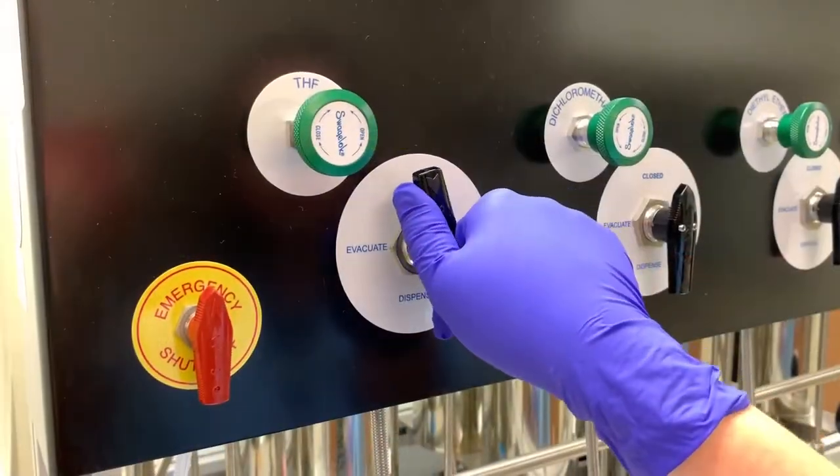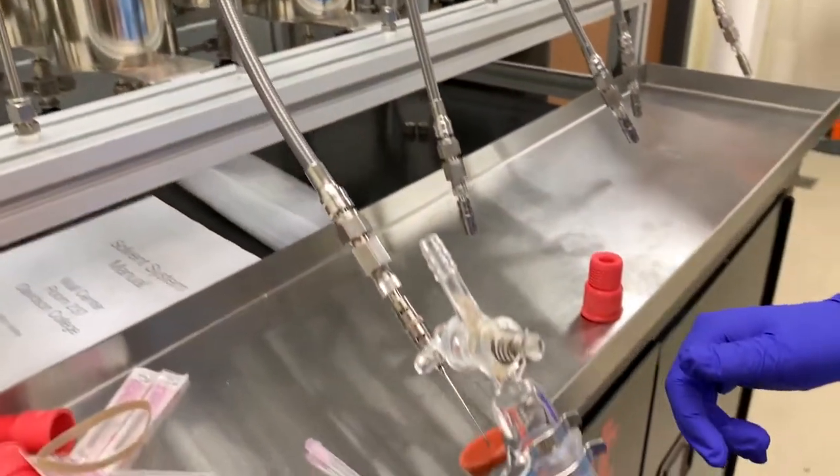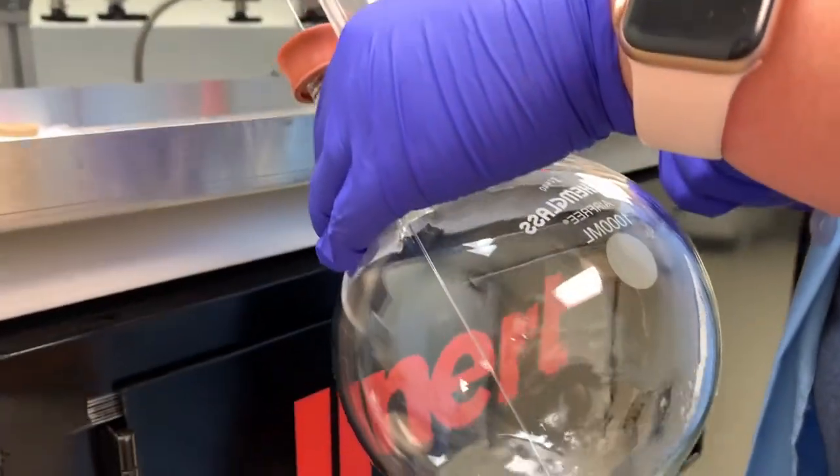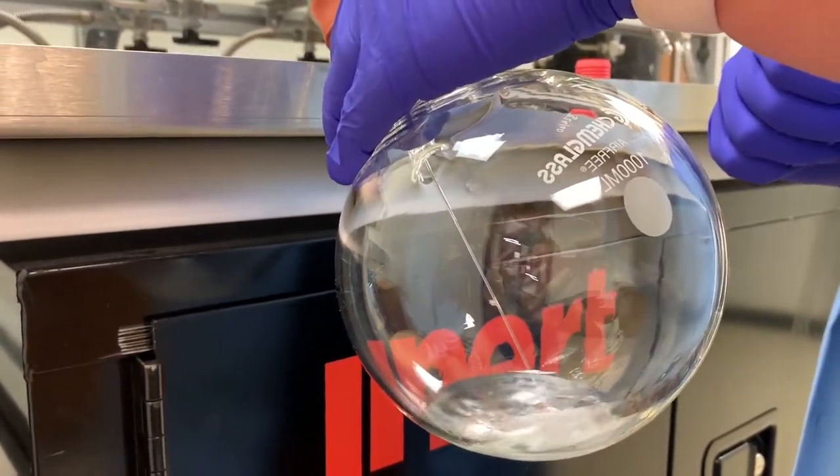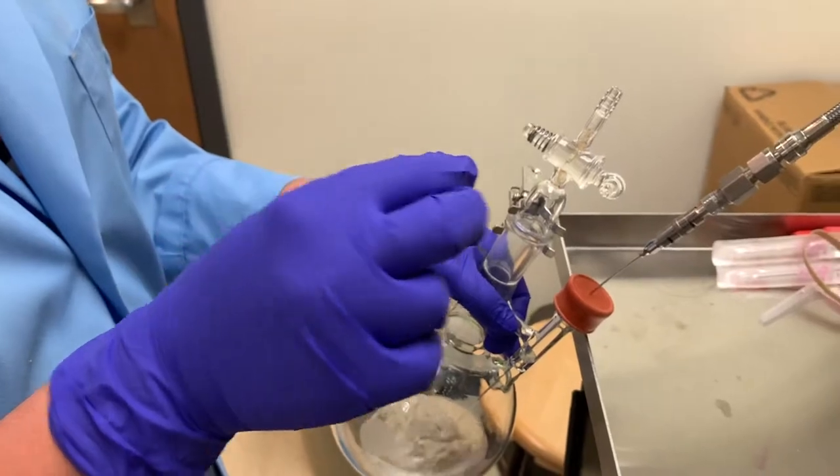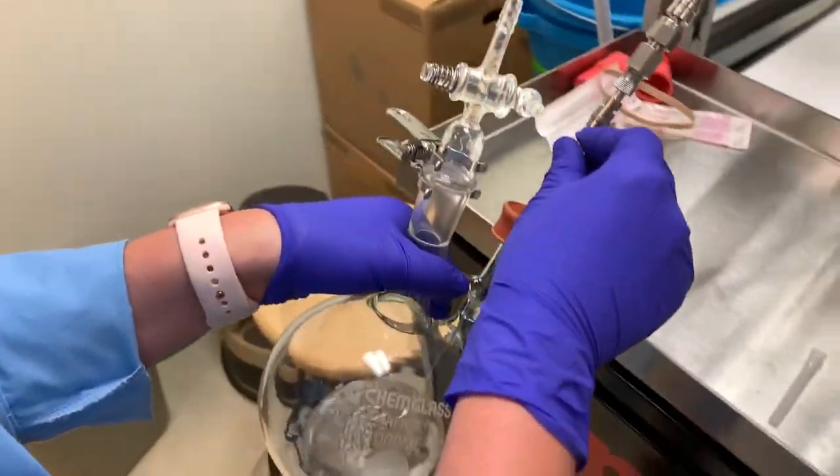At this point, do another clockwise turn of the valve to dispense. Liquid should begin flowing. If not, there is a green knob near the black valve that might need to be opened. If there is still no liquid, you can hear gas flowing, then the still might be empty.